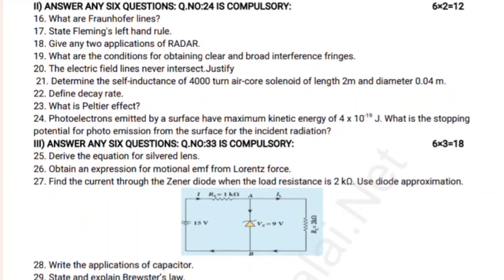The number of nuclei of carbon-14 remaining after 22,920 years — if the initial number of carbon-14 atoms is 10,000 and the half-life of carbon-14 is 5,730 years. You can see the numbers. Outline the number of carbon — you have to divide by the source of carbon.